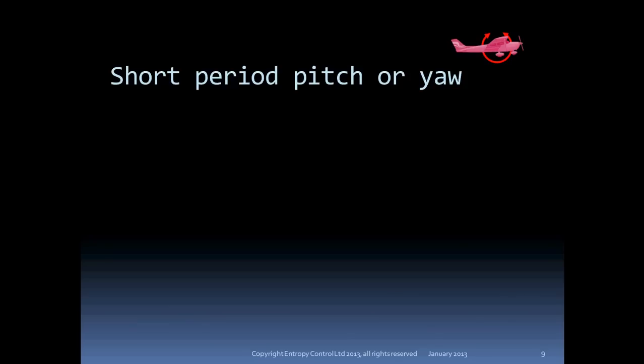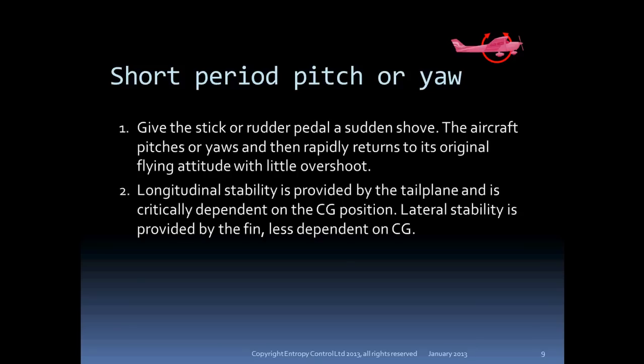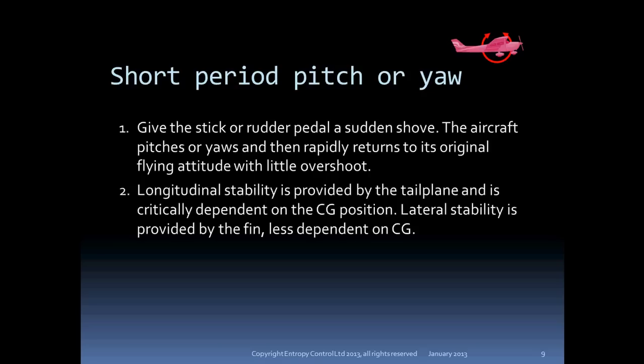Examining these modes of stability in detail, let's look at short period stability in pitch and yaw. If you disturb the flight in pitch or yaw, the aircraft rapidly returns to its flight path and the motion is heavily damped. This is a good thing, because the timescales involved are much too small to be dealt with by human reactions. It is the centre of gravity position that determines the short period stability in pitch. The aircraft has to be loaded inside the CG limits if it is to be at all controllable. Yaw stability also depends on CG position, but much less critically so.